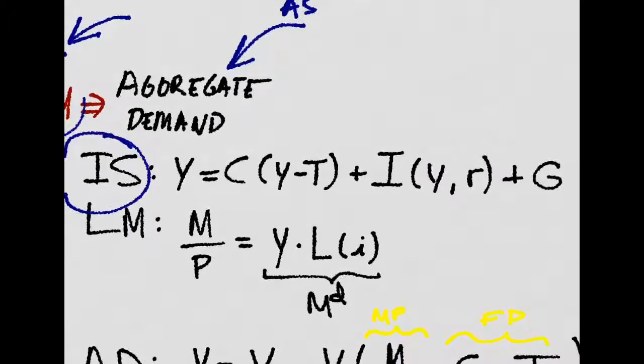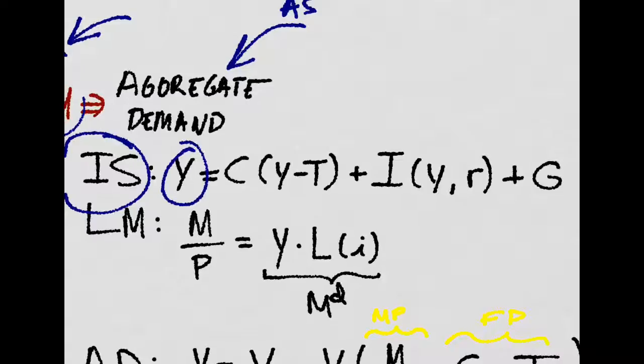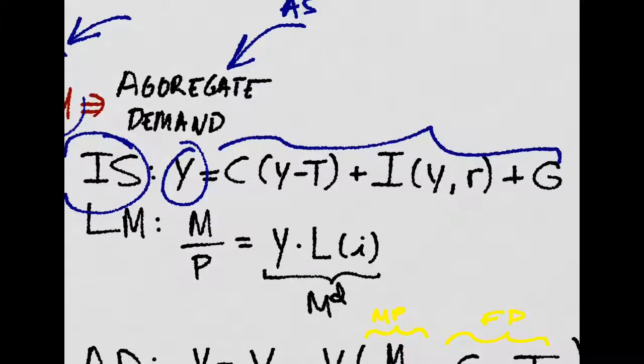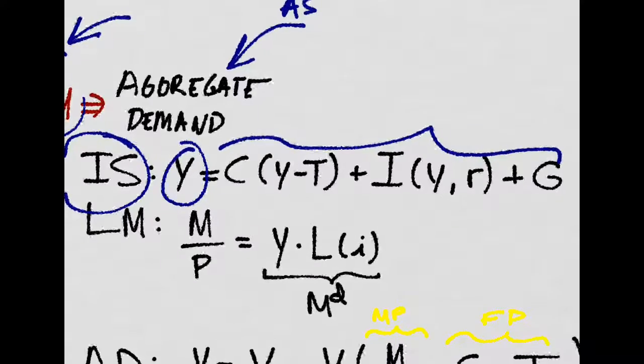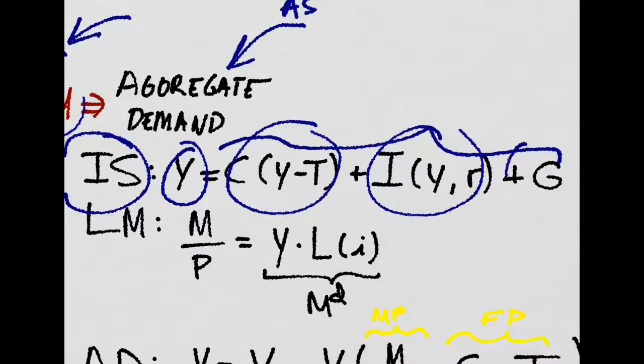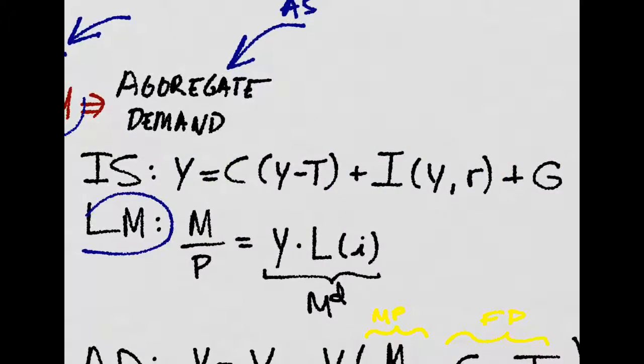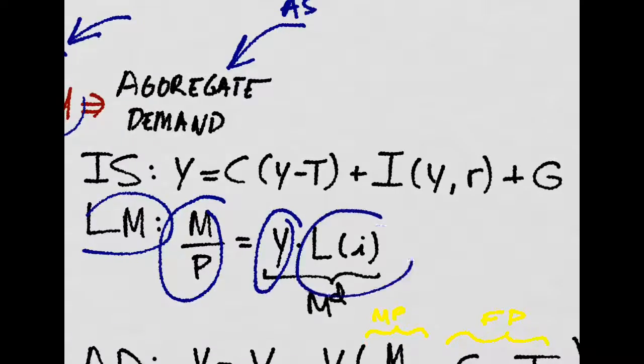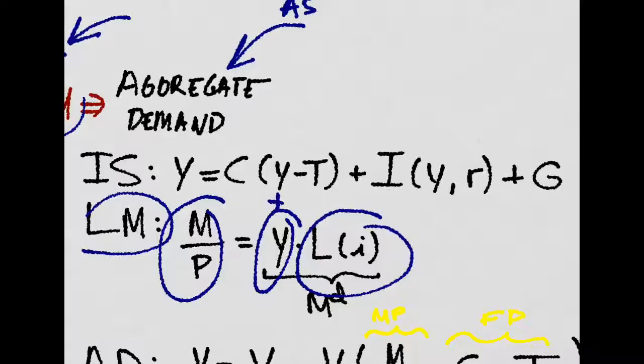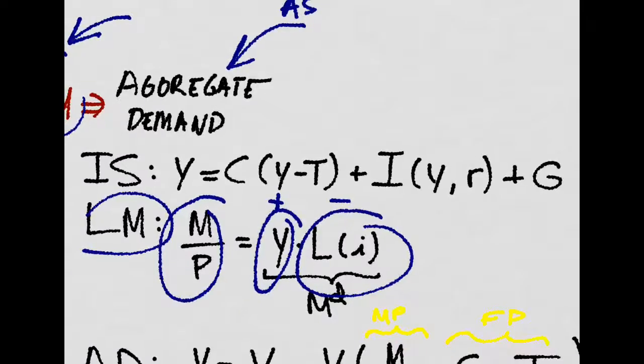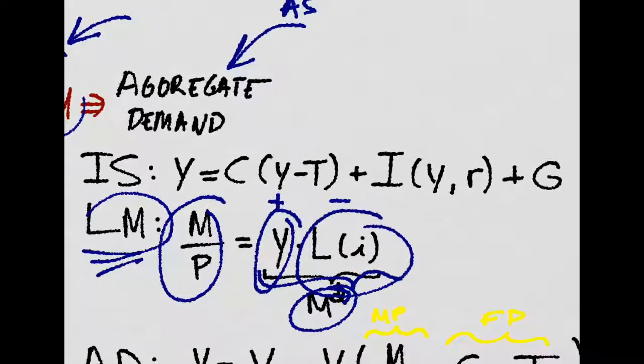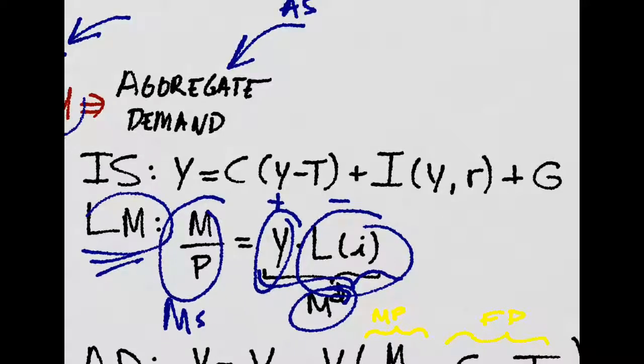Remember, IS is just output equal to aggregate demand, which is, assuming we have a closed economy, consumption, investment, and government spending. And the LM is just real money stock, real money supply, equal to output times this liquidity preference function. It depends positively on output and negatively on interest rate because this is actually money demand. The equilibrium in the money market is where real money supply equals money demand.